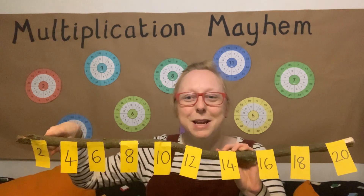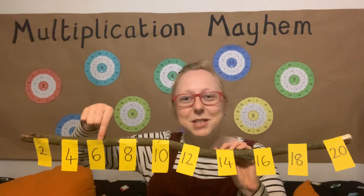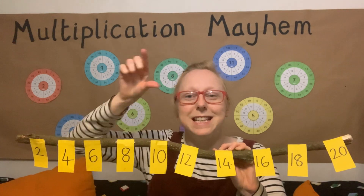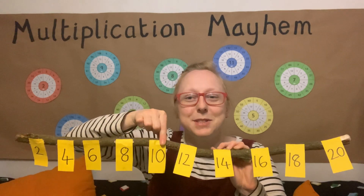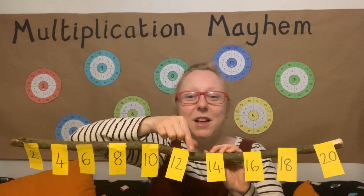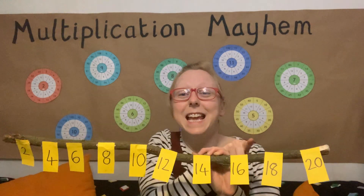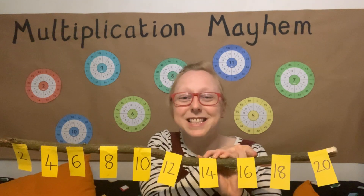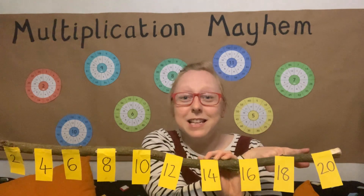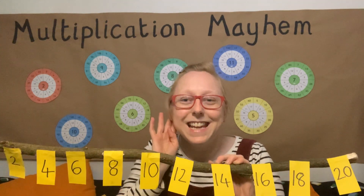1 times 2 is 2. 2 times 2 is 4. 3 times 2 is 6. 4 times 2 is 8. 5 times 2 is 10. 6 times 2 is 12. 7 times 2 is 14. 8 times 2 is 16. 9 times 2 is 18. And 10 times 2 is 20.